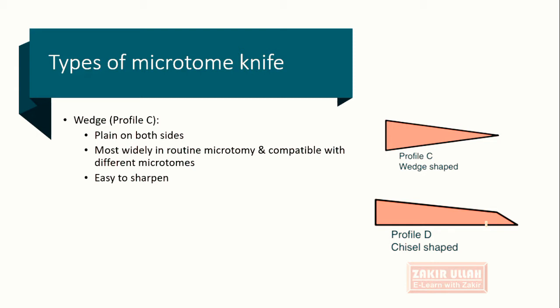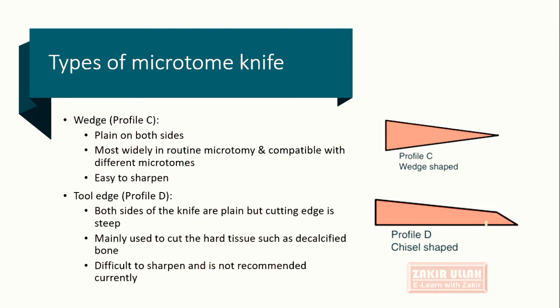The last one is the tool edge, or Profile D, in which both sides of the knife are plain, but at the cutting edge there is a strip. This knife is compatible with different types of microtomes and is easy to sharpen. Profile D is mainly used to cut hard tissues such as decalcified bones. However, tool edge knives are very difficult to sharpen and are not commonly used or recommended nowadays.